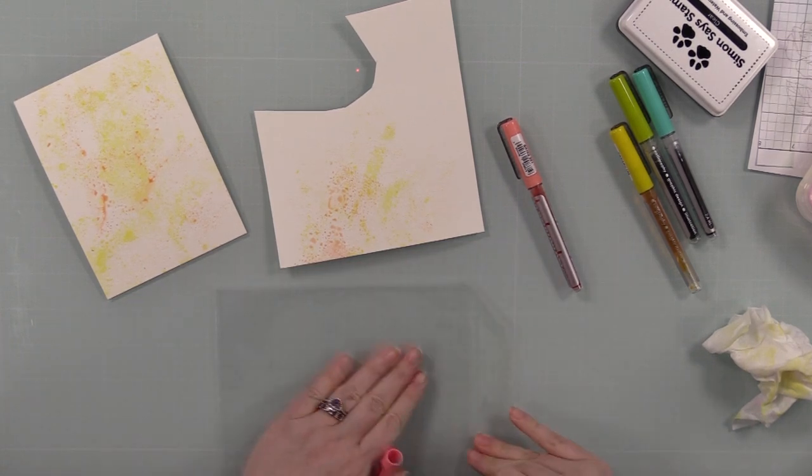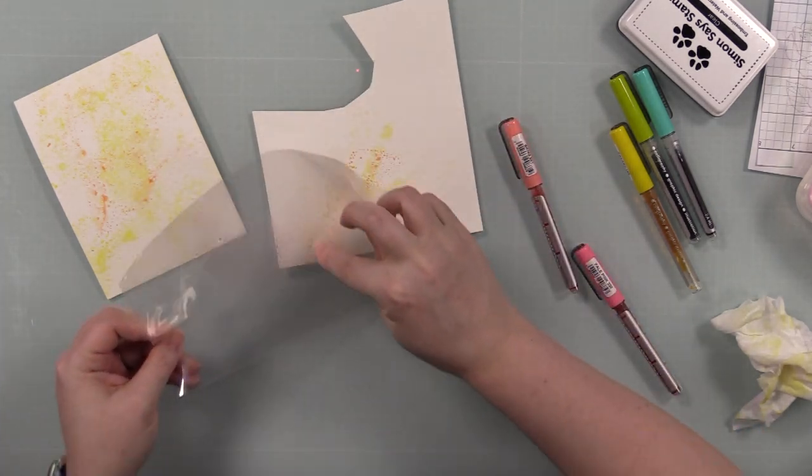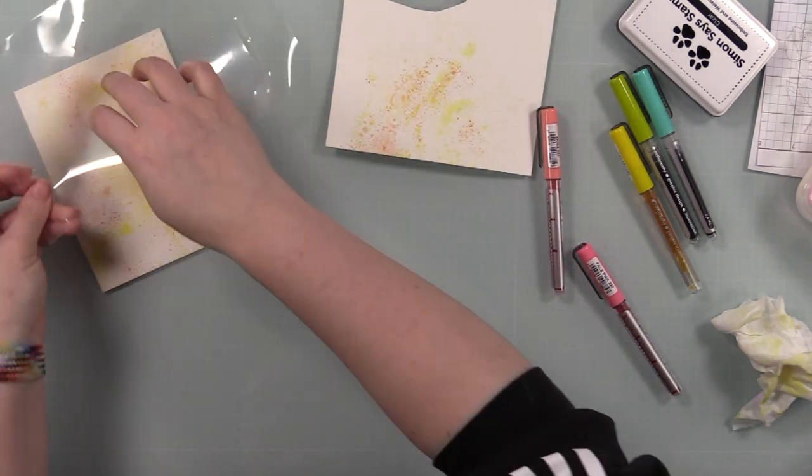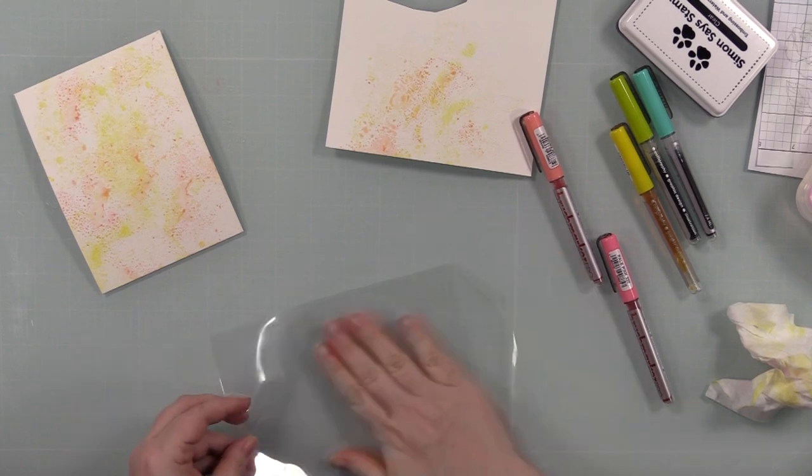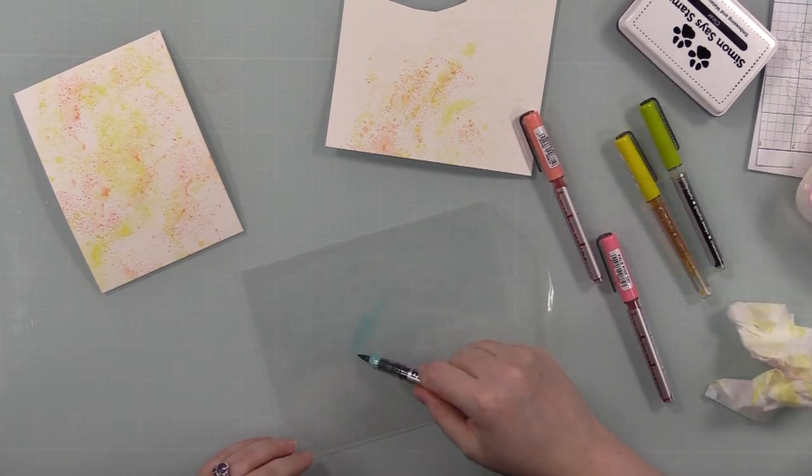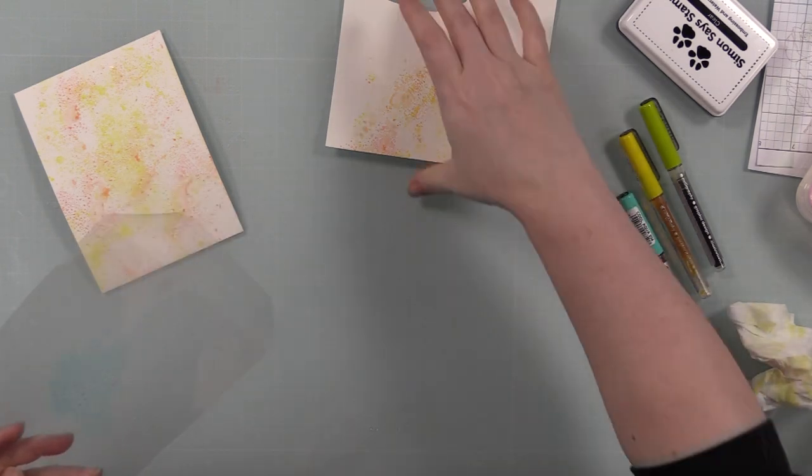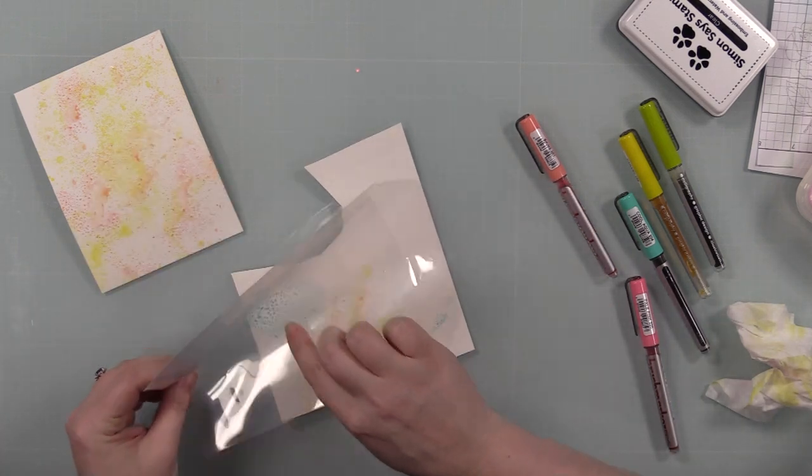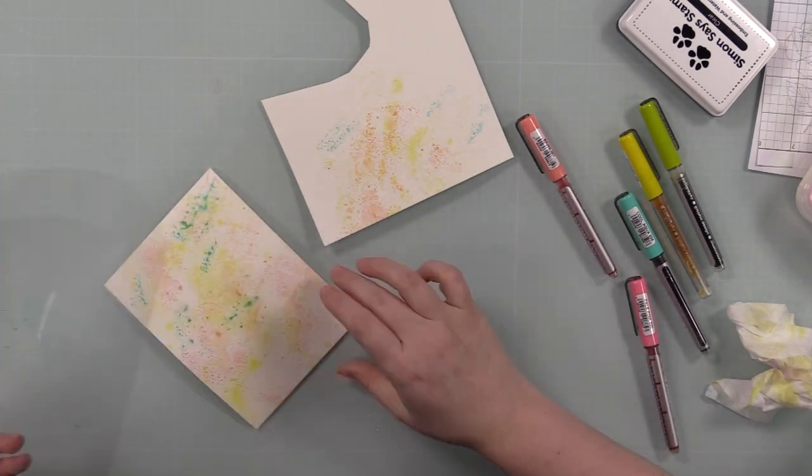Smushing inks or markers onto a non-porous surface, spraying with water, then pressing your watercolor paper into it - you're just surprised with the results. But this does give you a lot more control because you can see where you're putting your inks. This will work with any water-reactive ink - distress inks, oxide inks, Simon's positively saturated inks. These markers and any other watercolor type markers will probably work too.